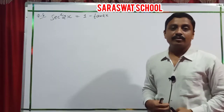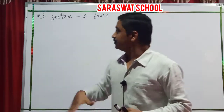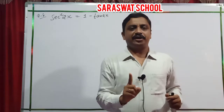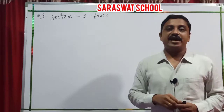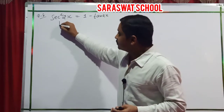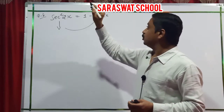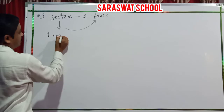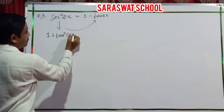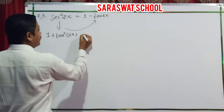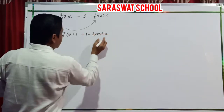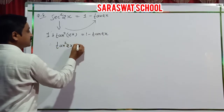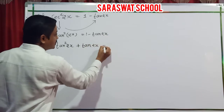Next numerical: sec² 2x equals 1 minus tan x. First check that degrees are the same. I translate sec² 2x using the identity 1 plus tan² theta equals sec² theta. After substitution and moving the right side to the left: tan² 2x plus tan x equals 0.